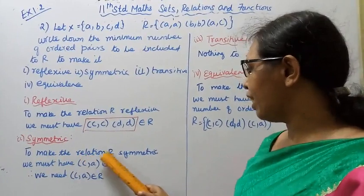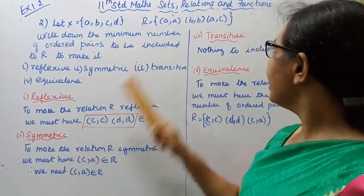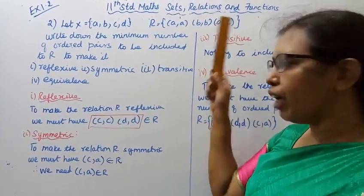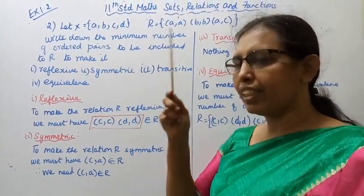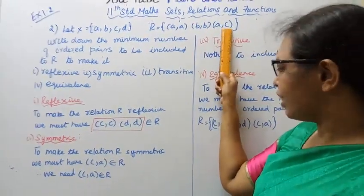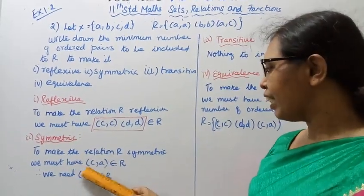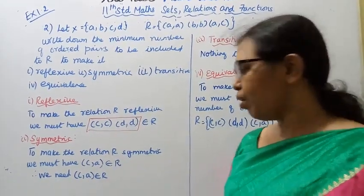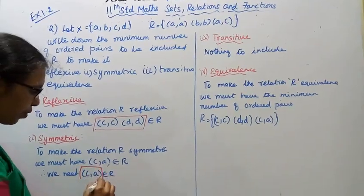Symmetric: To make the relation R symmetric, we must have the following. We have (a,c) in R. By definition of symmetric, if A is related to C, then C must be related to A. So we need (c,a) to belong to R.